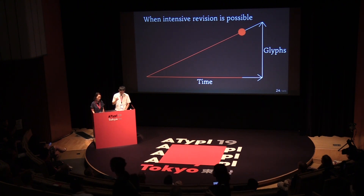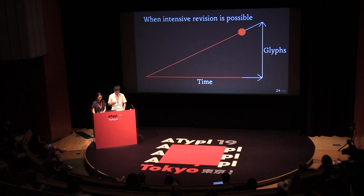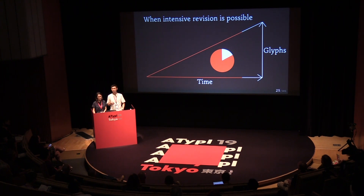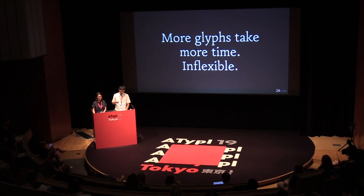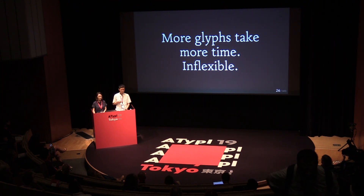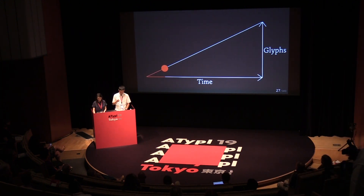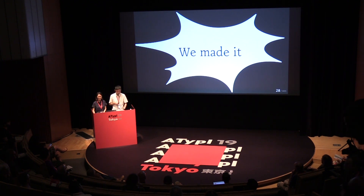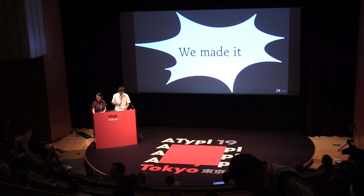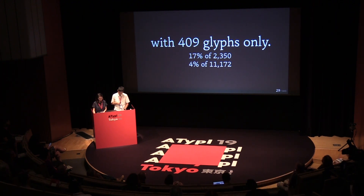And here is the point when intensive revision is possible, because there are groups of various glyphs. Unfortunately, there are already too many glyphs to revise. Therefore it requires more time. Moreover, revision at this point can affect the extent of a whole revision and makes the process more inflexible. But what if we can do intensive revision earlier? You'd be awesome. And we made it possible. How? With only a few glyphs — just 17% of minimum and 4% of maximum Hangul glyphs to be made.